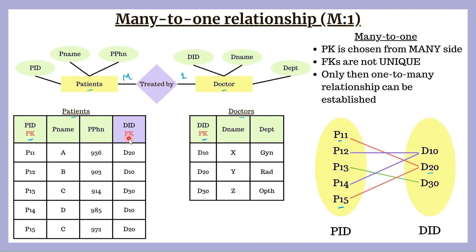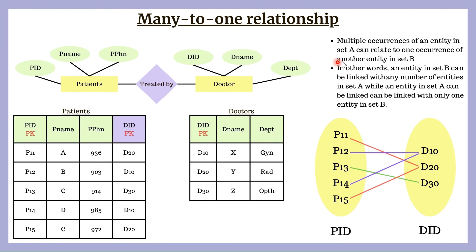The definition of many-to-one relationship is: multiple occurrences of an entity in set A can relate to one occurrence of another entity in set B. An entity in set B can be linked with any number of entities in set A, while an entity in set A can be linked with only one entity in set B. This is many-to-one relationship.